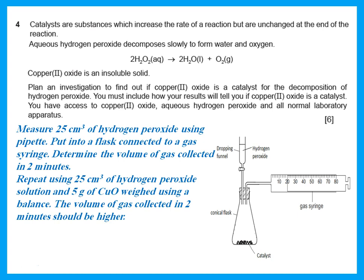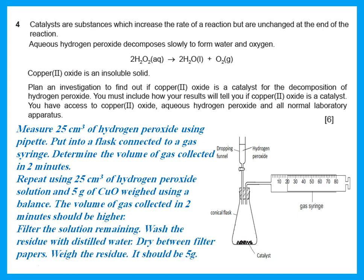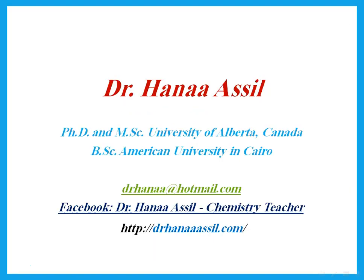Another way to confirm it is a catalyst: catalysts are unchanged at the end of the reaction. Weigh five grams of copper oxide at the beginning; after the reaction, filter the remaining solution, wash the residue with distilled water, dry it between filter papers, and weigh it. It should be the same mass as you started with. If you still have five grams of copper oxide at the end, this shows that it is a catalyst. That's the end of this paper — I hope it was useful, thank you for listening.